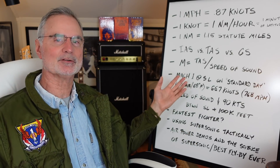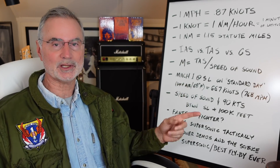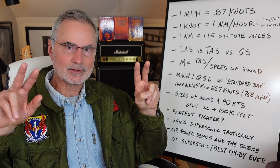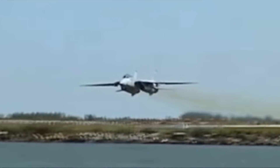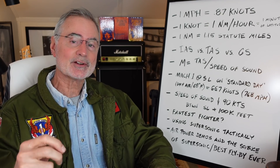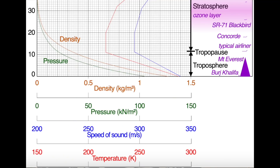Here you see the basic formula for Mach number — Mach, named for Austrian physicist Ernst Mach. Mach equals true airspeed over the speed of sound. At sea level on a standard day — a dry air day at 59 degrees Fahrenheit — the speed of sound is 667 knots or 768 miles per hour. As you can see on this graph, the speed of sound goes down as you get higher: between sea level and 100,000 feet, it drops about 90 knots.